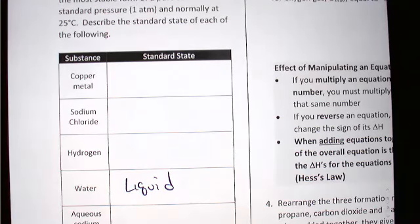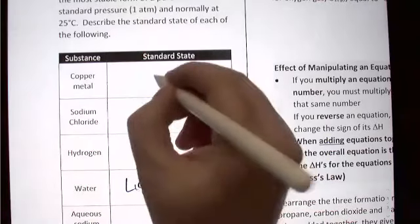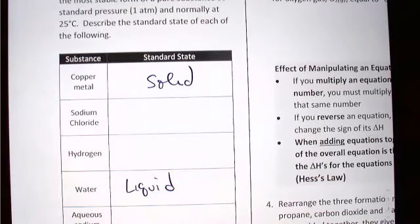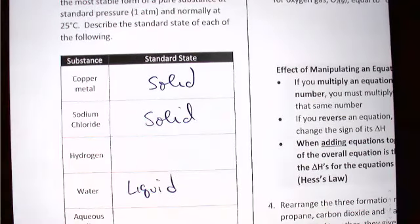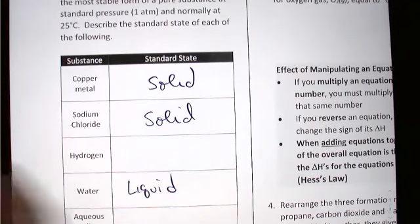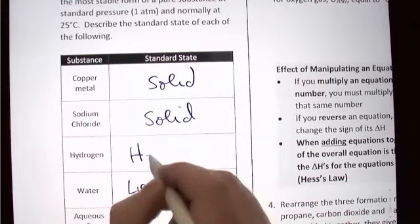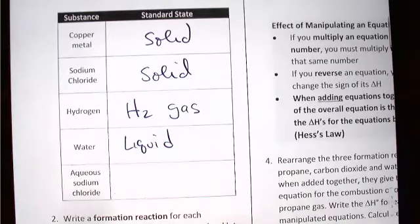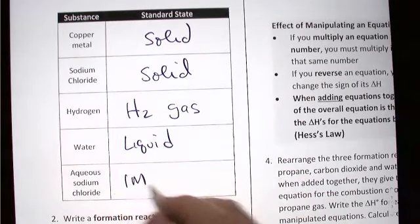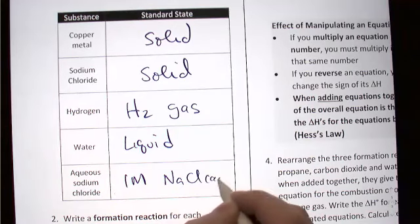The standard state of copper would be solid copper — copper at room temperature is solid metal. The standard state of sodium chloride, table salt, would be the solid crystal lattice structure of table salt. Hydrogen's standard state would be the diatomic H2 gas. It's not just H — the HOFBrINCl elements would be H2 gas. And then aqueous sodium chloride — the standard state there would be a one molar solution of sodium chloride dissolved in water.